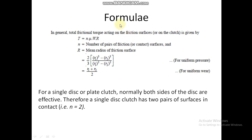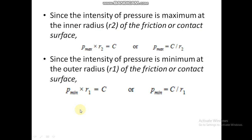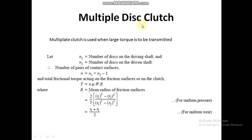So r = (r1 + r2)/2 is the mean radius of the friction surface. The torque on the clutch is T = n·μ·W·r, where n is the number of pairs of friction surfaces — typically two, since both sides of the clutch plate are friction surfaces. For a single disc clutch, n = 2. Maximum pressure occurs at inner radius r2: p_max = c/r2; minimum pressure at r1: p_min = c/r1.